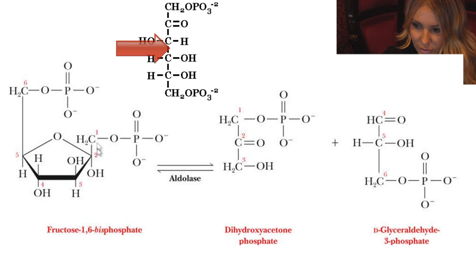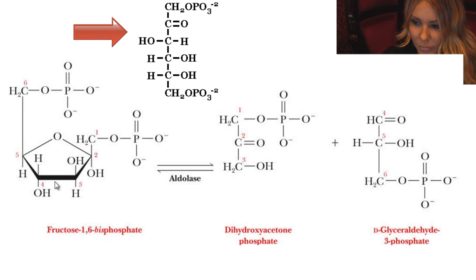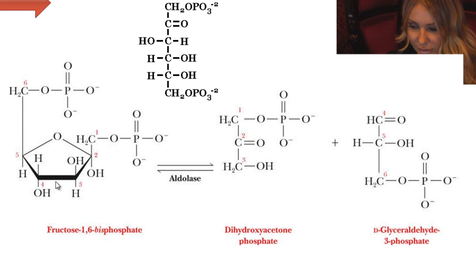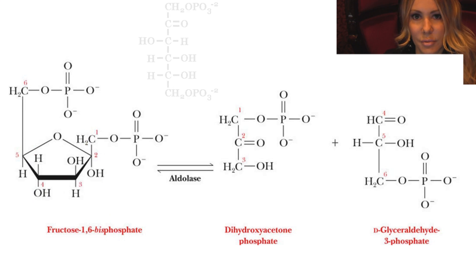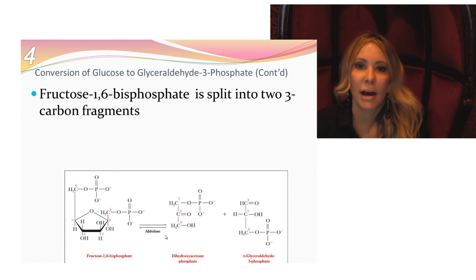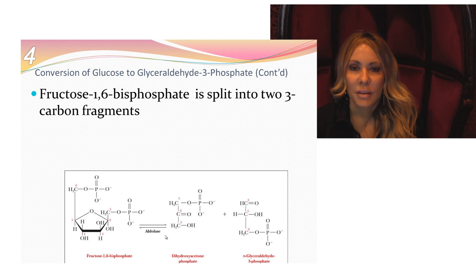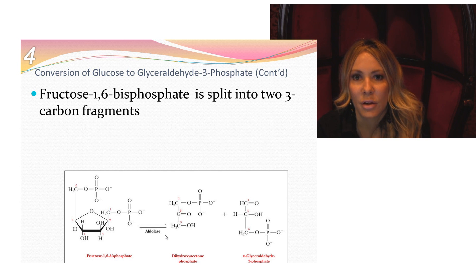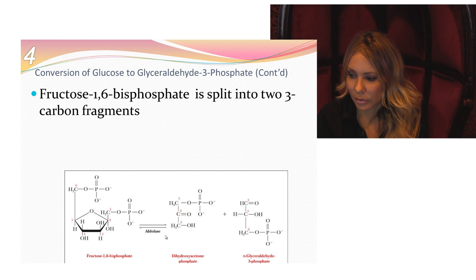Looking at the diagram, you can count carbons one through six. When we cleave it, half of the molecule will have the ketone because fructose 1,6-bisphosphate is a ketose sugar. Aldolase acts as a chemical butcher, cleaving this six-carbon molecule into two three-carbon molecules — one aldose and one ketose sugar.